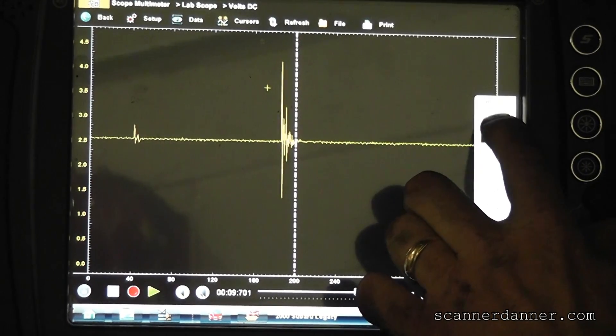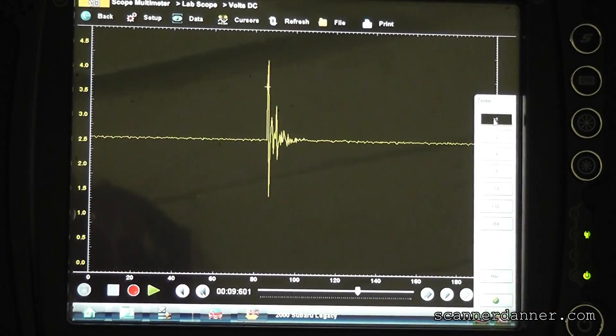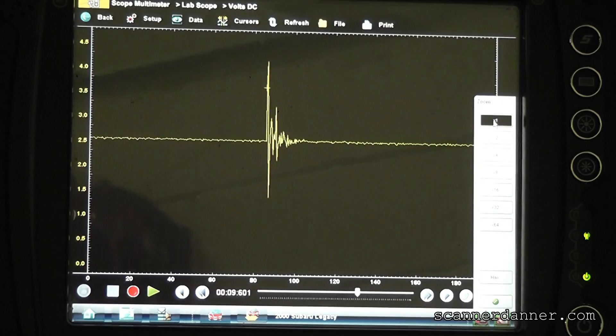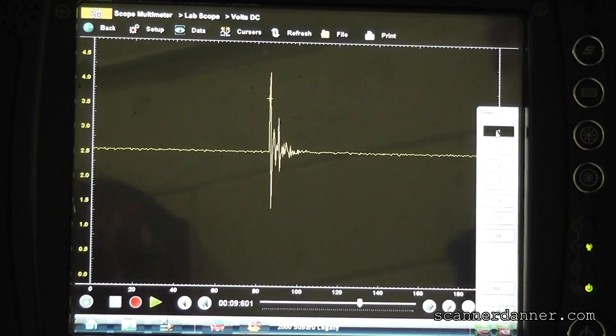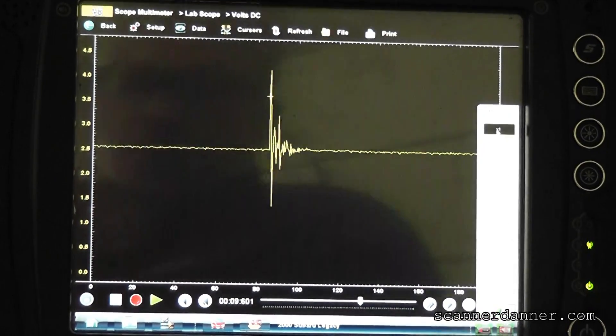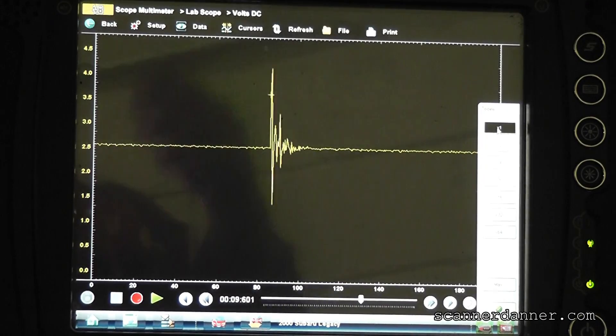There's your AC sine wave right there riding over top of a DC. That's what you're looking at, that's how the knock sensor works. So this is actually a functional knock sensor right now is what that test tells you.